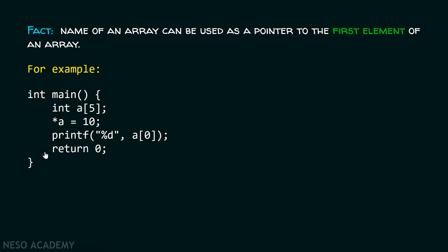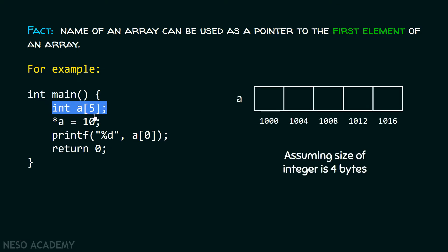We have a main function and inside this main function I have declared an array 'a' which consists of five elements. Initially it is not containing any element. Here is the pictorial representation of this array 'a', and I am assuming the base address to be 1000 and the size of integer to be 4 bytes.